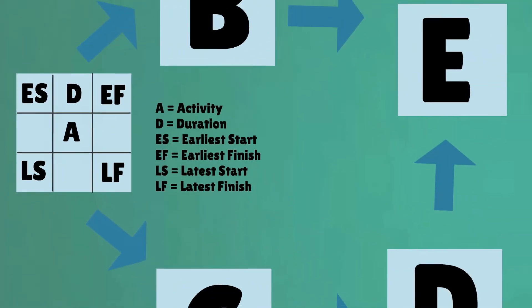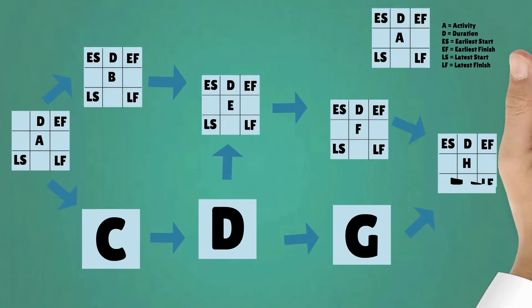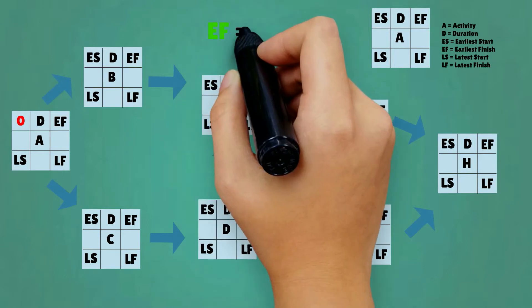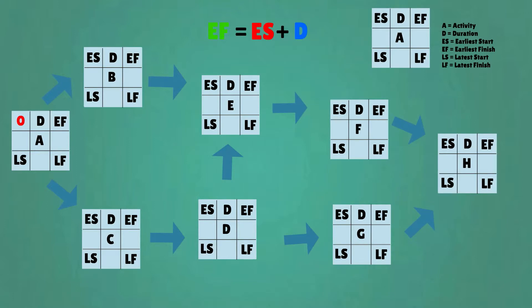To find out what the fastest time is to finish the project, we fill out the first line of the cubicles. We start with zero, as week zero is the starting point of the project. We use the formula early finish equals early start plus duration to fill out the remaining lines of the cubicles.